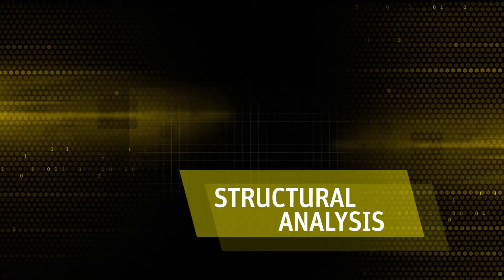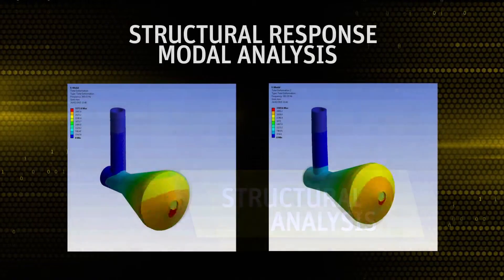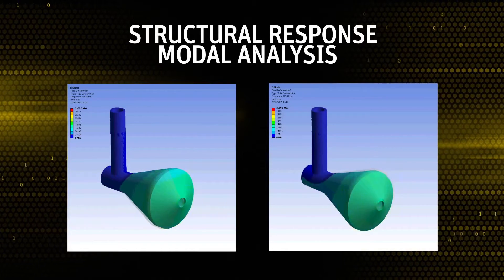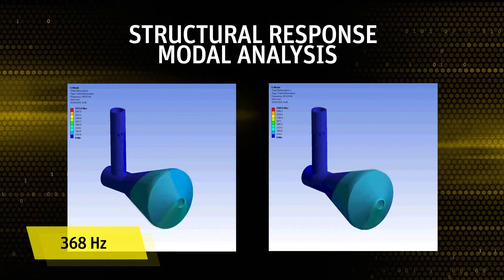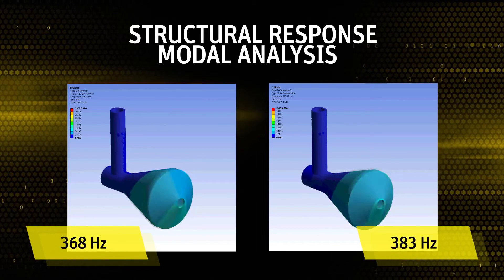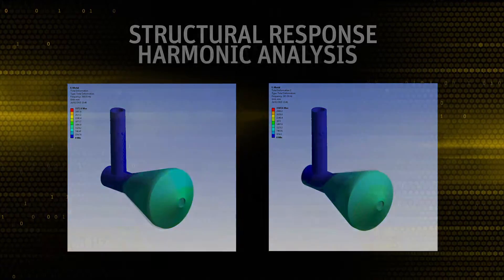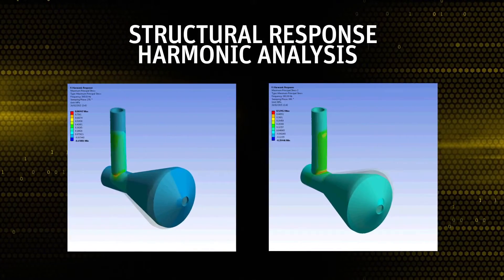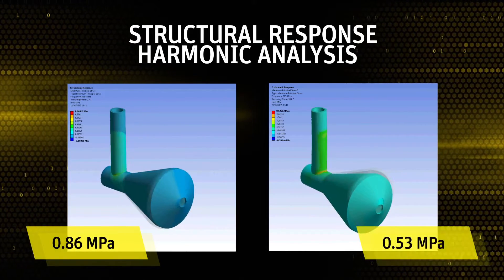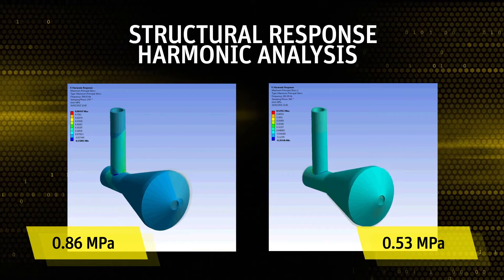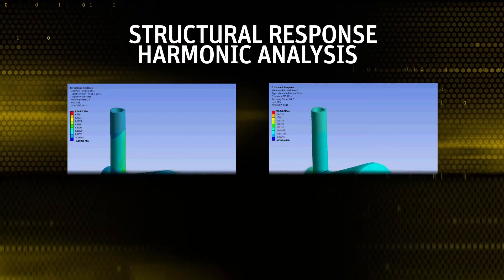ANSYS Mechanical can then be used to perform modal analysis to determine the structural response of the flow meter to the fluid dynamics loads. The results from the simulation showed that two modes of vibration at 368 Hz and 383 Hz are in the frequency range of the excitation from the vortex shedding. In addition, the results of the harmonic response analysis showed peak stress levels at 0.86 and 0.53 MPa caused by fluid-induced vibration forces from vortex shedding loads.